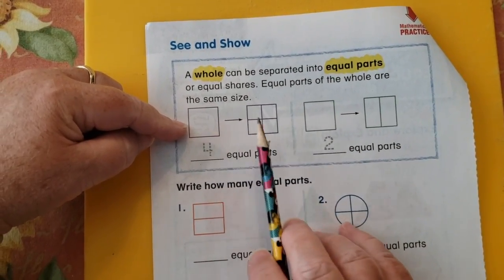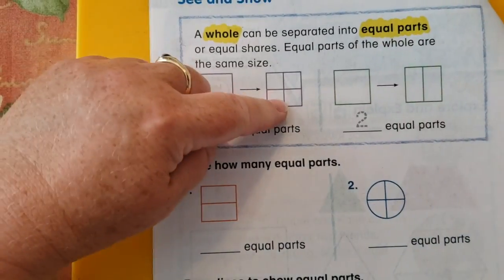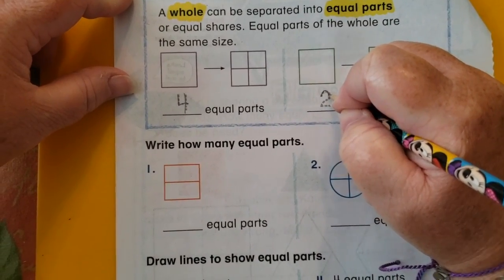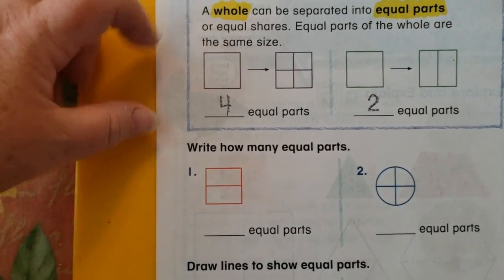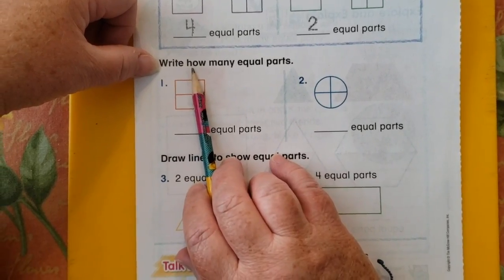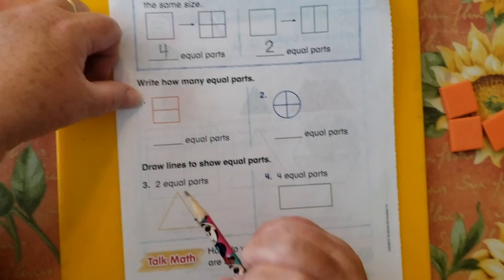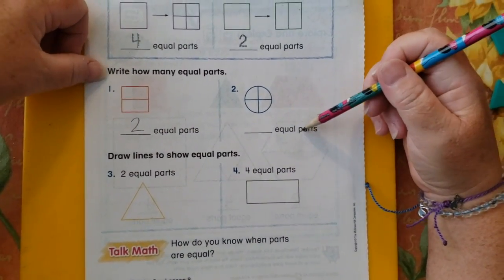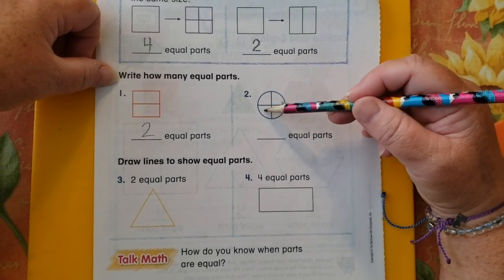So when they cut the square into four equal parts, it looks like that. Or into two equal parts. This time it's cut into rectangles, isn't it? So now we need to look down here and write how many equal parts. So how many equal parts there? Two. And how many equal parts in the circle? One, two, three, four.